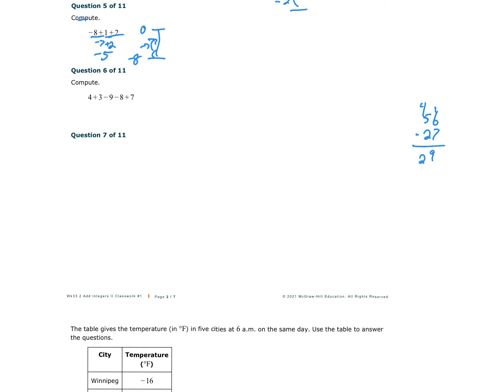Number 6 is similar. So we're starting at positive 4. We're going up 3 more. So now I'm at 7. Then we're going down 9. Well, it's 7 down to 0. Now we're all the way down here at negative 2. Now we're dropping another 8. So from negative 2 down 8, now we're at negative 10. And then we're climbing back up 7. So now we end up at negative 3.